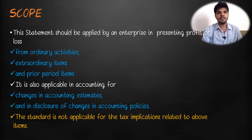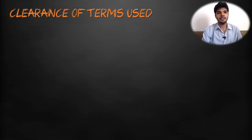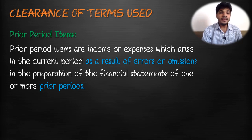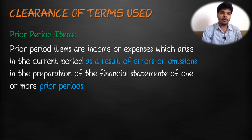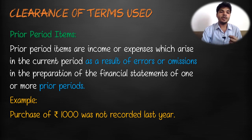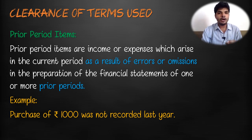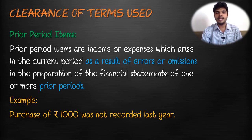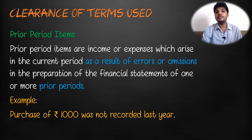Prior period items are income or expenses which arise in the current period as a result of errors or omissions in the preparation of the financial statements of one or more prior periods. For example, a purchase of rupees 1000 that was not recorded last year. Prior period items are actually because of errors and omissions — when we forget to record some transaction in the books of account in the previous period. Error and omission must be proved before we classify anything as a prior period item.